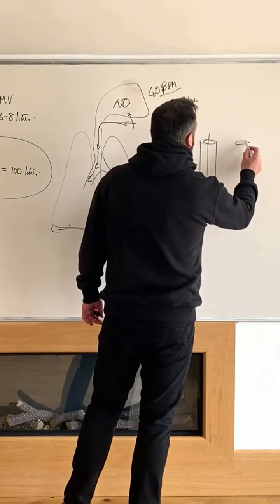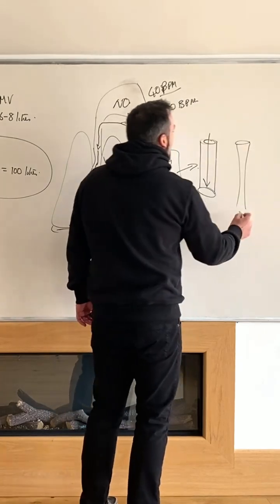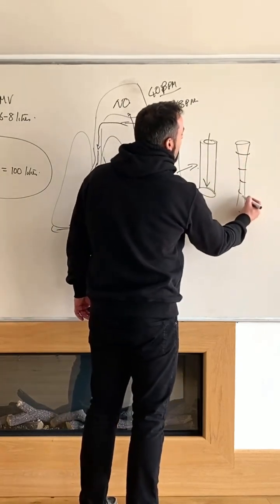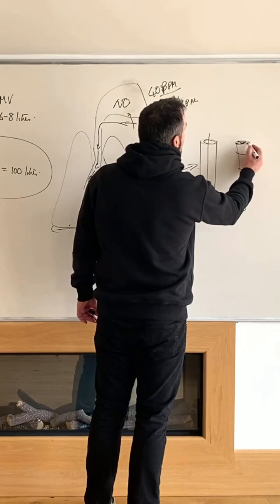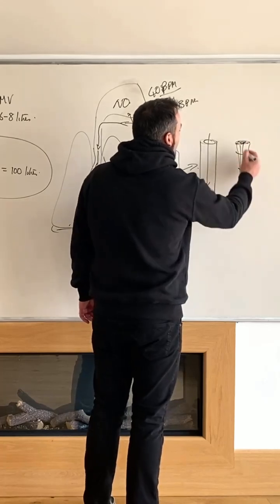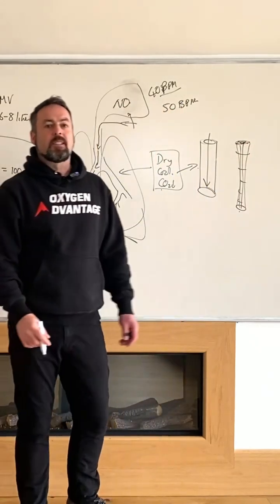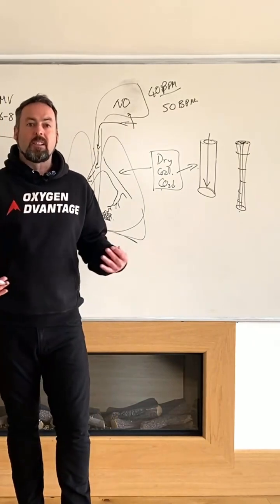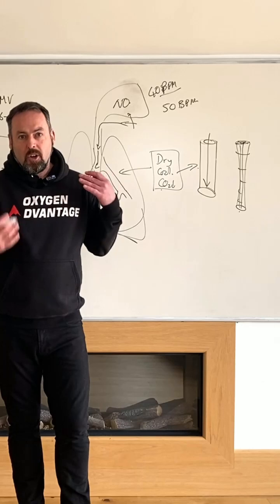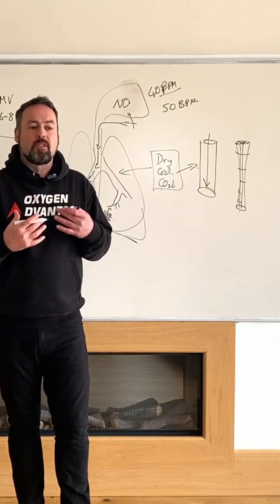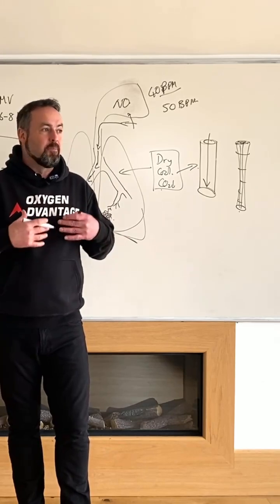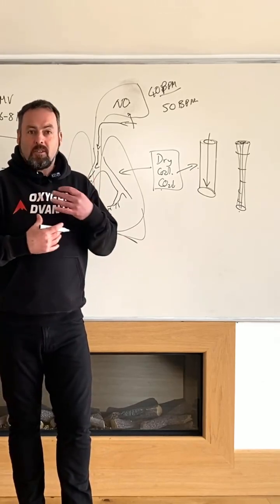Airways can narrow due to a combination of smooth muscle constriction, inflammation of the inner airway walls, and increased mucus. This can manifest as breathlessness, coughing, chest tightness, and squeezing sensations. Some people might just feel that their breathing is off or experience a rawness.